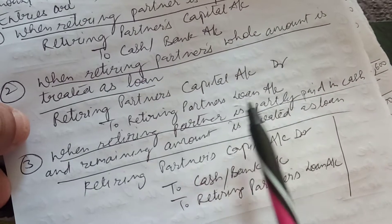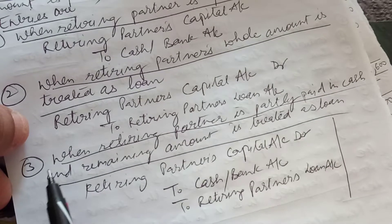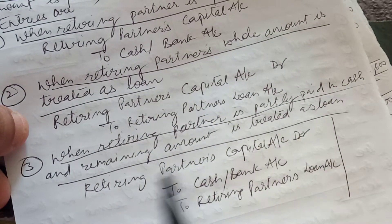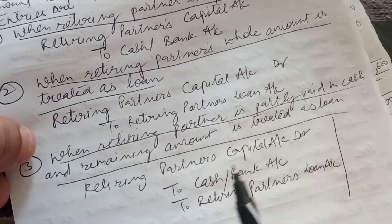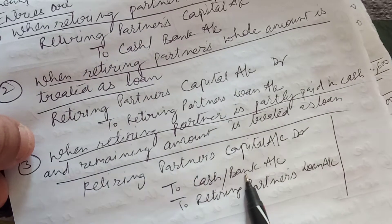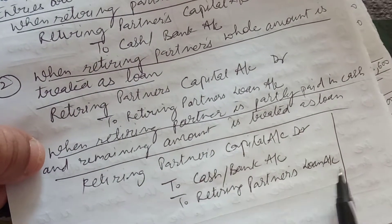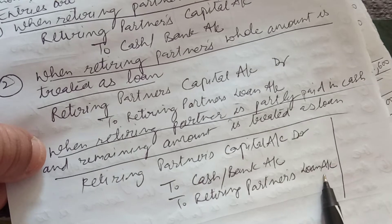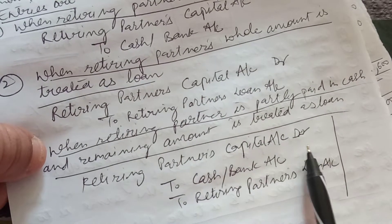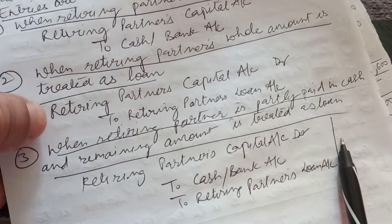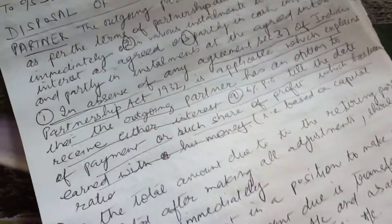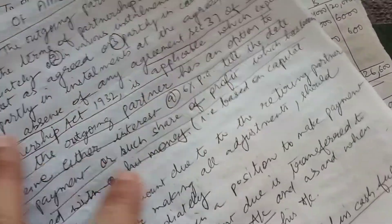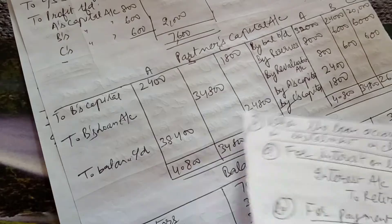When the retiring partner is partly paid in cash and the remaining amount is treated as loan — Retiring Partner's Capital Account is debited, to Cash with the amount paid immediately, and to Retiring Partner's Loan Account with the amount treated as loan. This is how the disposal of amount is done and the payment is finally made.